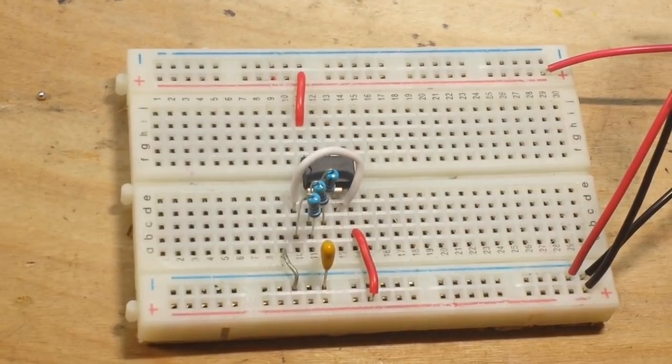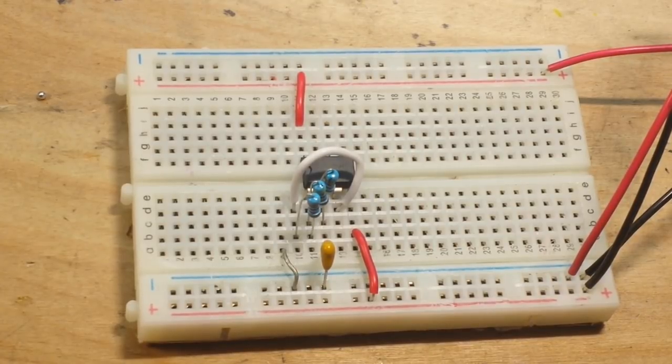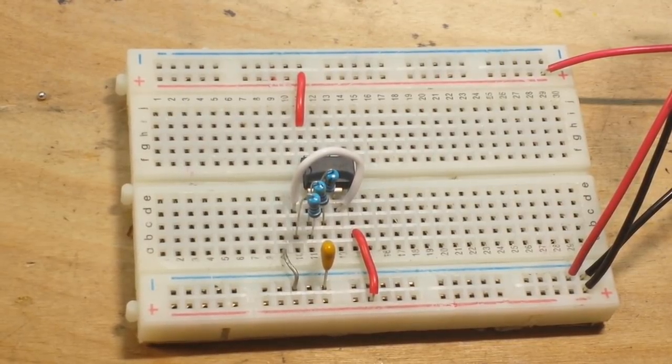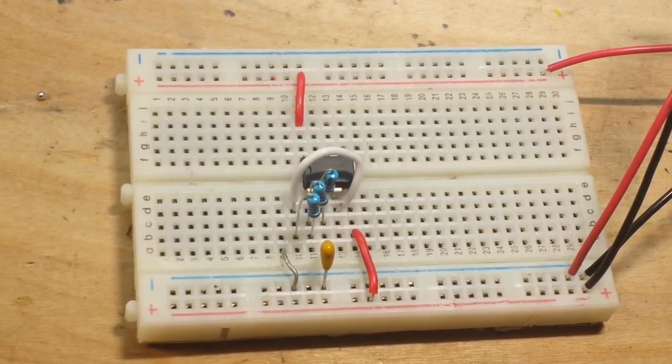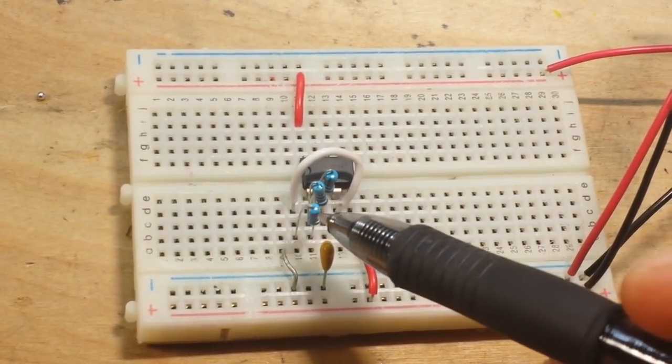Now, somebody also asked, how does the op-amp change the saw wave into the square wave? Well, it doesn't. The op-amp works as a simple analog comparator. It compares the voltage on the non-inverting and the inverting inputs, and it gives us either a positive or a negative.